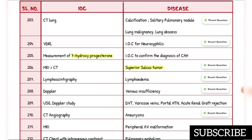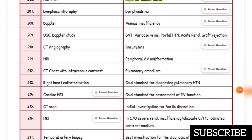Calcification, solitary pulmonary nodule, lung malignancy, and lung abscess: investigation of choice is CT lung. Investigation of choice for neurosyphilis is VDRL. Investigation of choice to confirm diagnosis of CAH is measurement of 17-hydroxyprogesterone. Investigation of choice for superior sulcus tumor is MRI, then CT. Investigation of choice for lymphedema is lymphoscintigraphy.